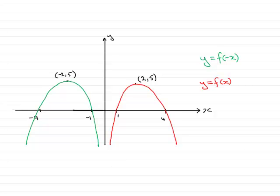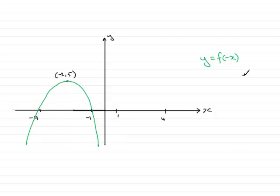So if I remove the original graph, that should be the sketch that you should do of y equals f of negative x.